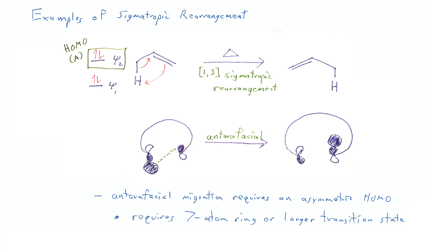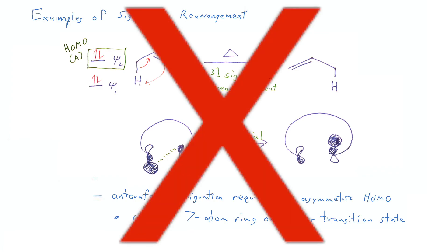If we draw out a simplified molecular orbital diagram for this reaction, we see that the hydrogen atom, in order to go from being bonded to one end of the system to the other, would actually have to go from the bottom side on the left to the top side on the right, to maintain that in-phase bonding interaction. Since the reaction involves crossing sides, we call that an antarafacial process. An antarafacial process can't really happen unless the transition state has at least seven atoms in that ring. In this case, the transition state is only going to have four atoms in the ring, and that means it is too strained to actually do the reaction — in other words, this reaction doesn't work.